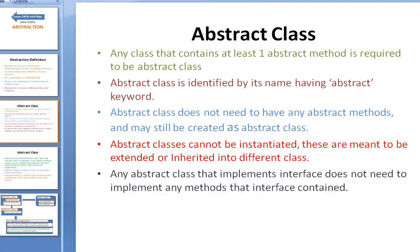Since an abstract class cannot be instantiated, you have to extend it — you cannot make an object directly and call the methods inside. The compiler will not allow that. Also, if an abstract class implements an interface, the interface will not force the abstract class to implement the methods it contains, because the abstract class already has abstract methods of its own and there's no point forcing it to implement more.